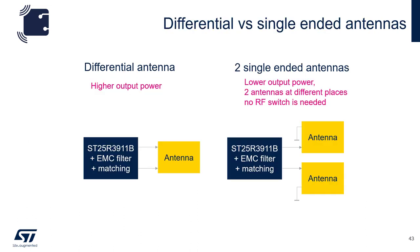The output of the 3911B is differential, and in differential mode the highest amount of output power is available to the antenna. However, the device can also be configured for either one or two single-ended antennas. Configuring the device for single-ended reduces the output power available to the antenna by half. When configured for one single-ended antenna, the number of matching components is also reduced by half. The benefit of configuring for two single-ended antennas is that these antennas can be placed in different places and orientations, and no RF switch is needed as this is done via internal register settings. This is very valuable in systems where the orientation of the card to the reader is unknown.